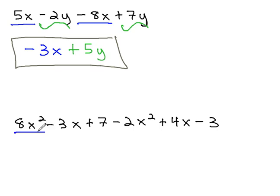So the 8 has an x squared. To find a like term, we're looking for the other term with x squared on it. 8 minus 2 gives us 6 of these x squareds.